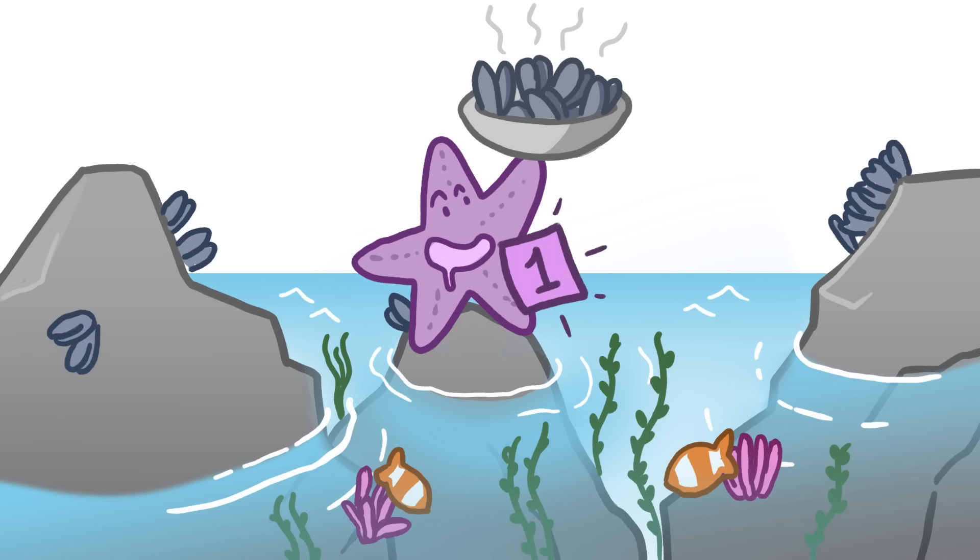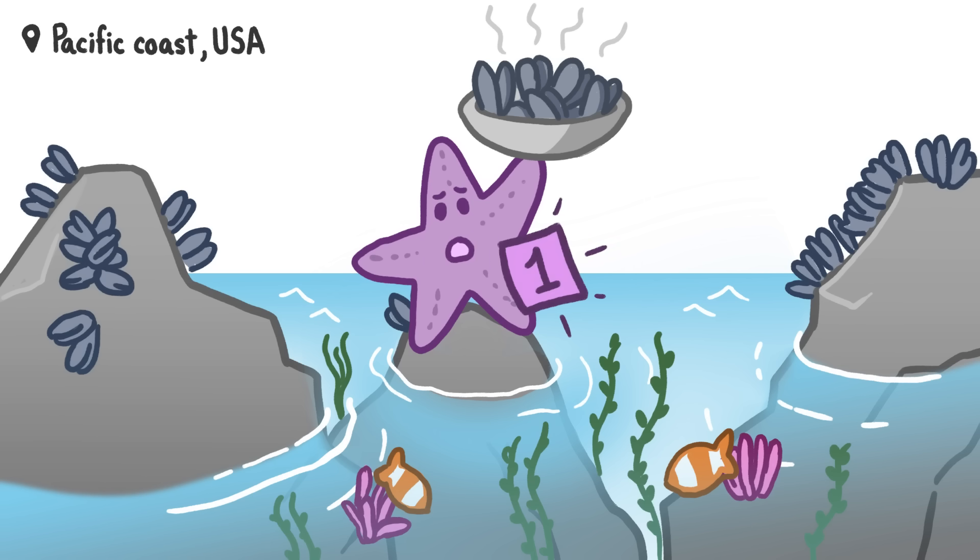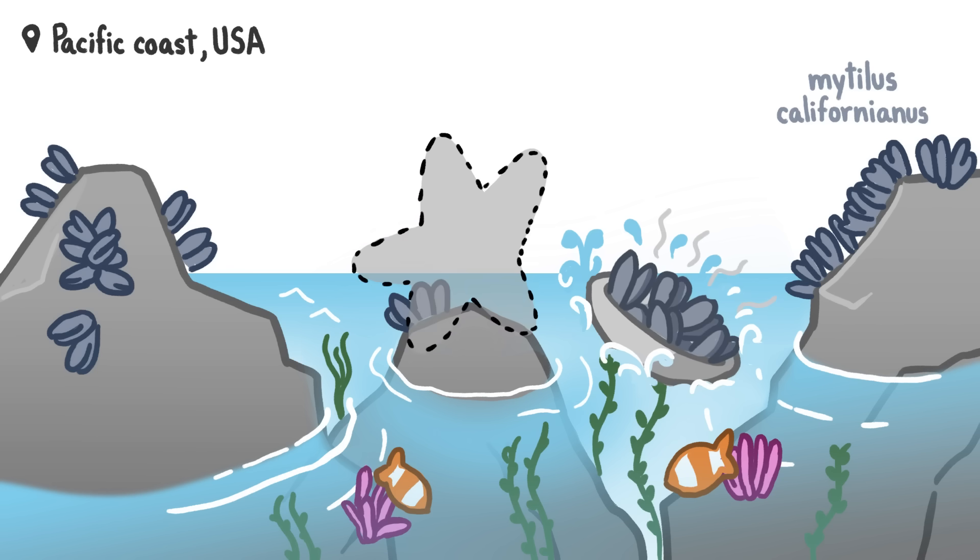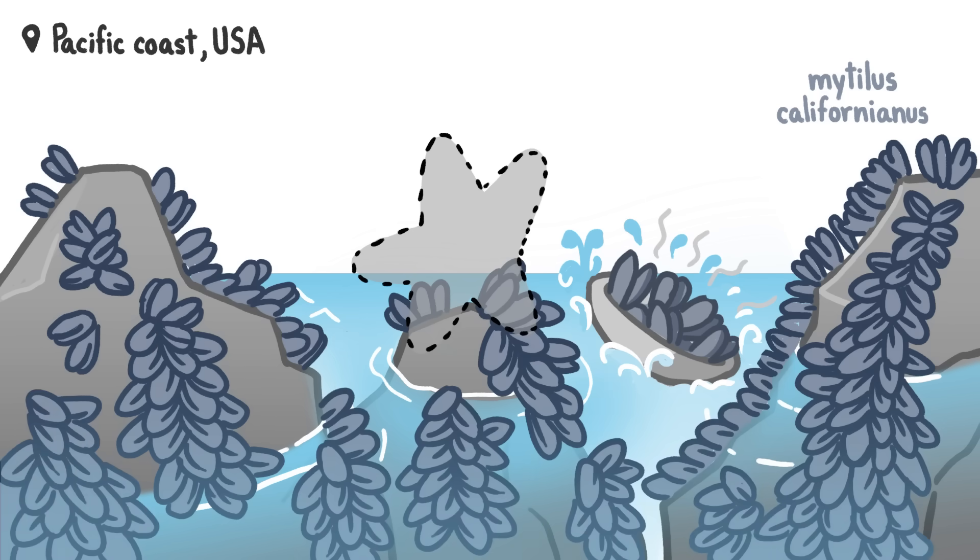In ecosystems with little redundancy, there's a much higher risk of collapse. For instance, on the rocky Pacific coast, a single species of sea star is the only major predator keeping the mussel population under control. Removing it disrupts, and essentially destroys, the entire system.